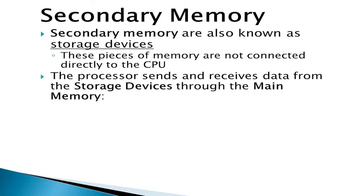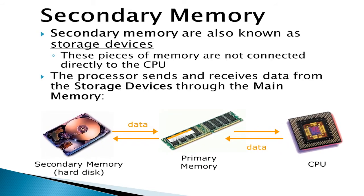Secondary memory are storage devices — for example, hard disks, flash drives, CDs, etc. Note that the main feature of secondary memory is that it is not directly connected to the CPU. The cycle works as follows: processing is done by the CPU; processed data is sent to the primary memory; from the primary memory, data is then stored in the secondary memory for recalling, for further processing, or for printing.